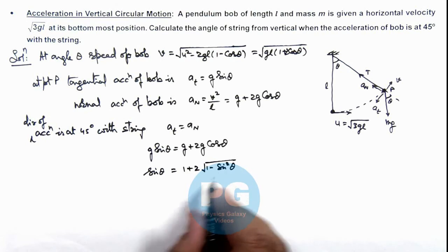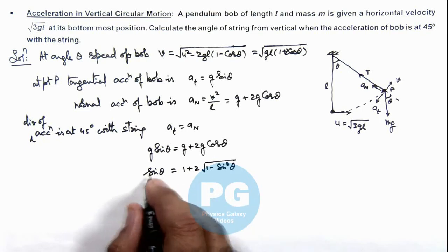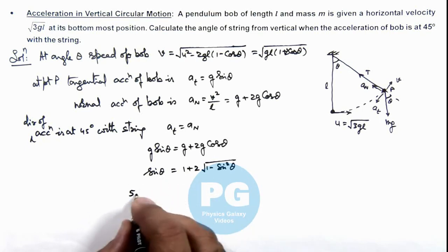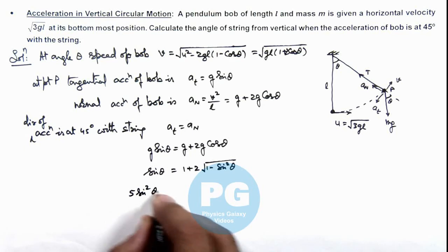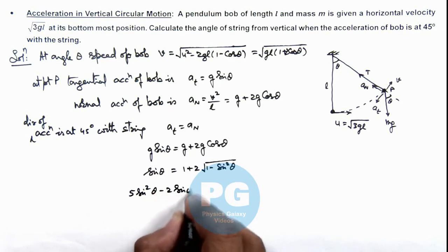If we square these terms and simplify, this will become a quadratic. I am just leaving the simplification in writing the final quadratic equation which will be 5sin²θ - 2sin θ - 3 = 0.